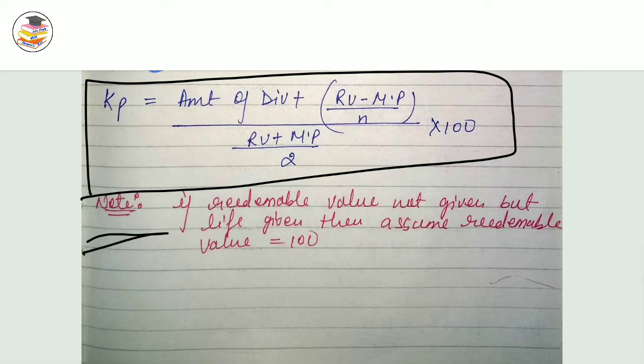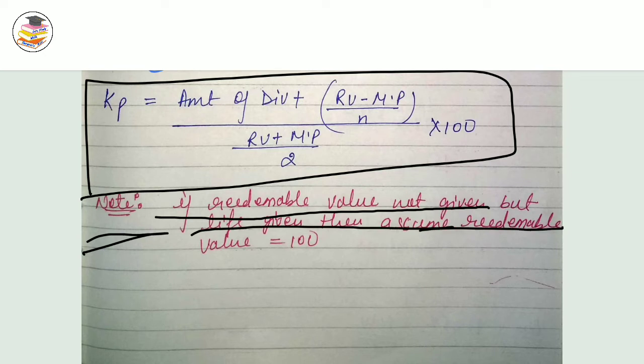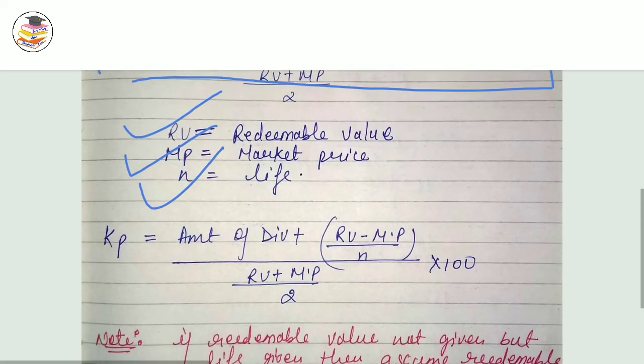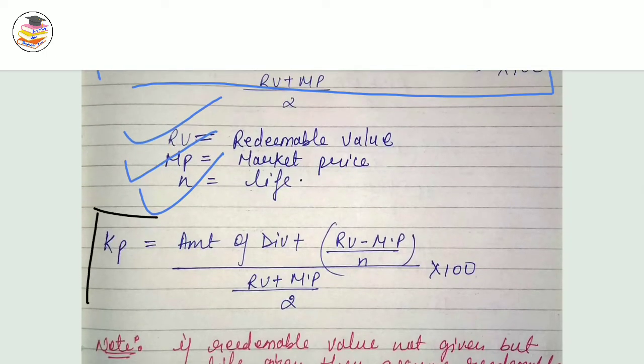Note: If redeemable value is not given but life is given, then assume redeemable value is equal to 100.